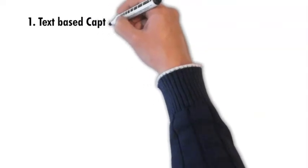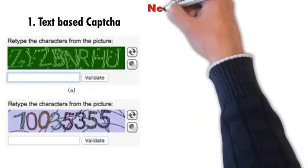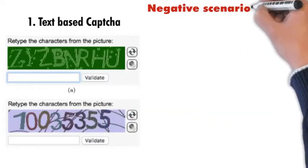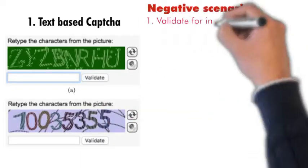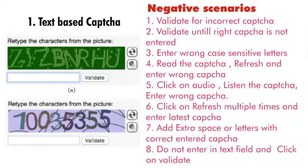Now let's see the negative scenarios of text-based CAPTCHA. First, validate for an incorrect CAPTCHA — whatever CAPTCHA is given, specifically write an incorrect one. Validate until the right CAPTCHA is not entered — write three or four wrong CAPTCHAs and then write the right one, then check whether it is getting validated or not. Enter wrong case-sensitive letters.